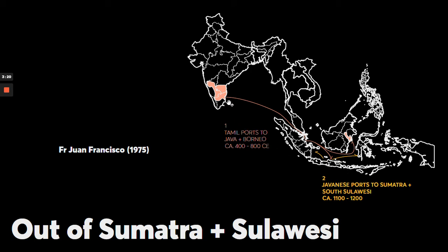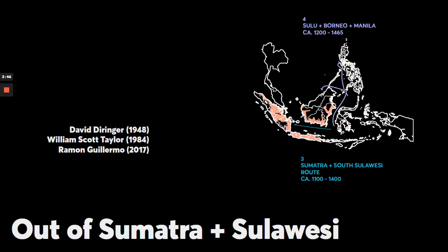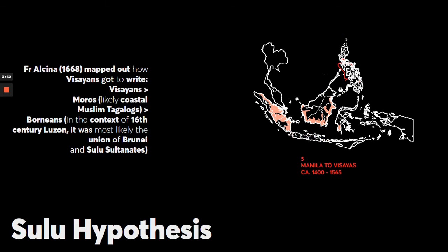This map shows a diagram of how the script might have traveled from India to the Philippines. First, it came from South India to Java, as Kawi and Pallava. Next, it may have evolved to Sumatra and Sulawesi. Then from Sulawesi, it went to Sulu, then to Manila. From Manila, it went to Visayas. This was recorded by a friar named Father Alcina.